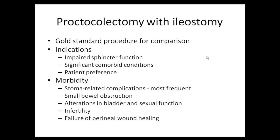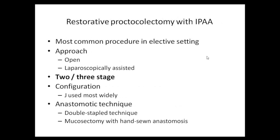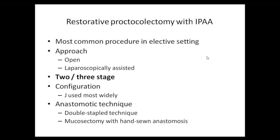Restorative proctocolectomy is the most common procedure in elective settings. The approach is either open or laparoscopic — both are equally good. It is performed in either two or three stages; very few centers do single-stage surgery. The most commonly used configuration is the J-pouch because it is easy to construct with the least complication rate. More complex pouches (W or S) have more anastomoses with higher leak risk. Post-IPAA, initially 8 to 12 loose stools daily are expected, but ultimately 4 to 6 stools per day with one nocturnal evacuation is the normal pouch function.